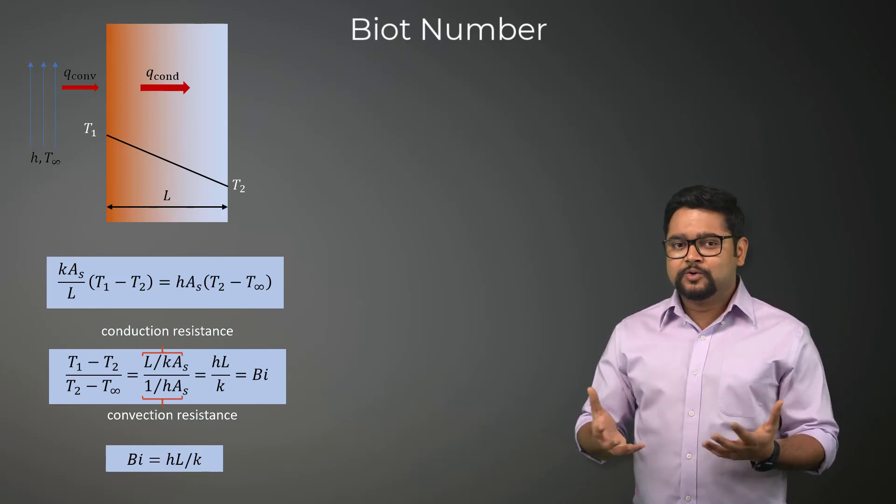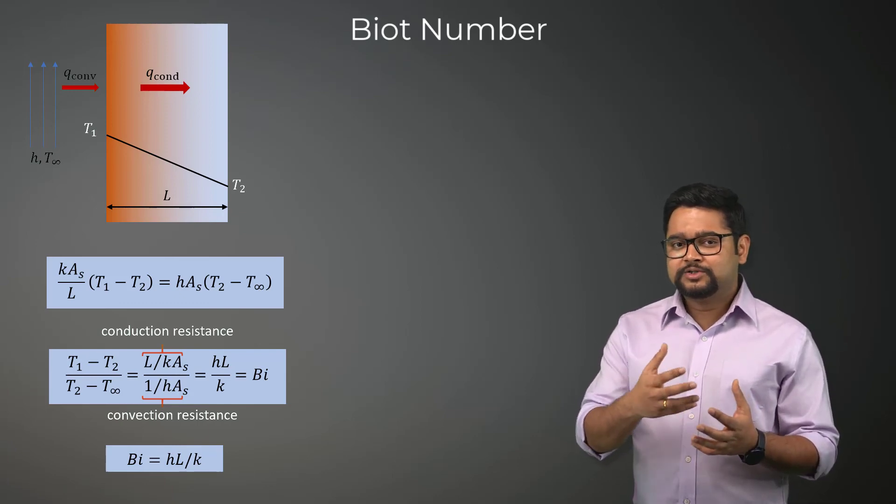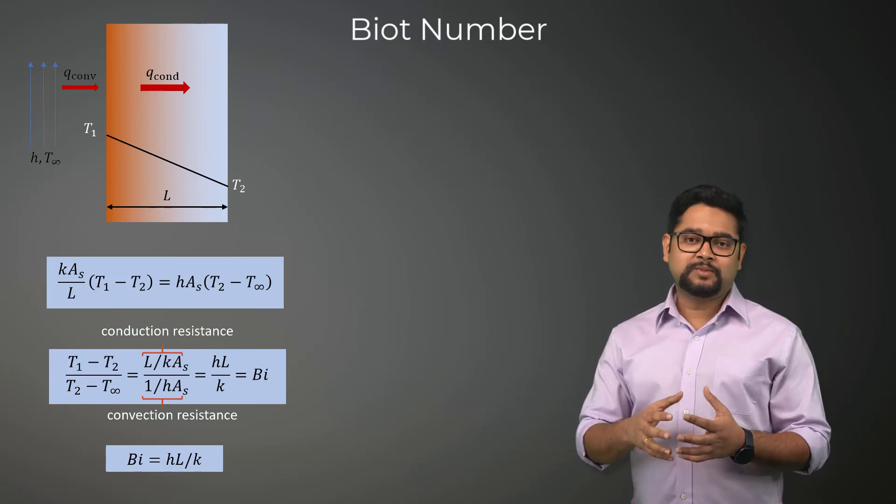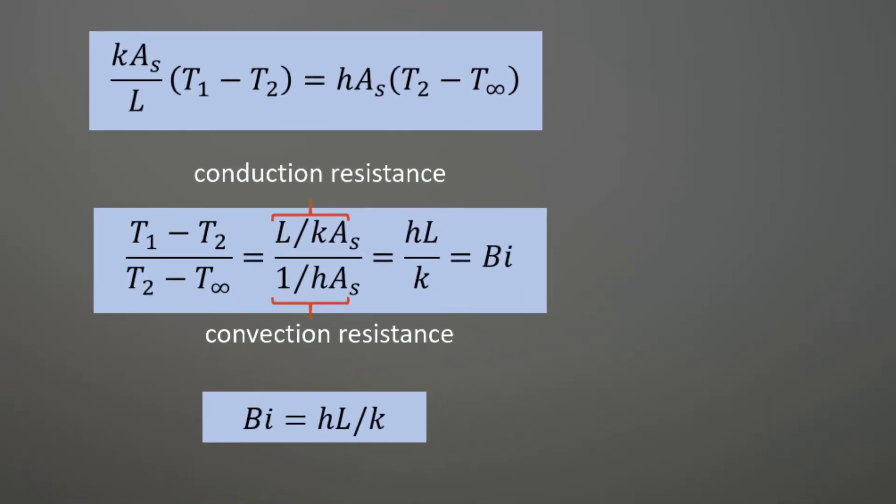Of course, it goes without saying, the smaller the Biot number, the closer it is to zero, the more accurate the lumped system analysis will be. It is generally accepted that the lumped system analysis is applicable if Biot number is less than or equal to 0.1.